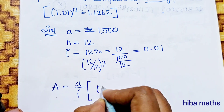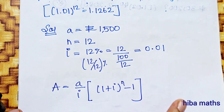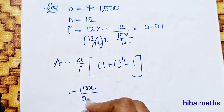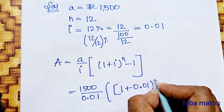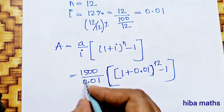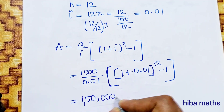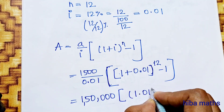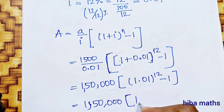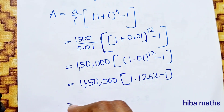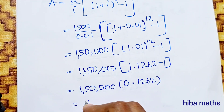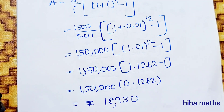Using the formula: A equals a by i, times (1 plus i) to the power n minus 1. Substituting a equals 1500, i equals 0.01, n equals 12. So 1500 divided by 0.01, times (1.01 to the power 12 minus 1). The value of 1.01 to the power 12 is 1.1262. So we get 150,000 times 0.1262, which equals Rs.18,930.